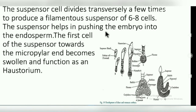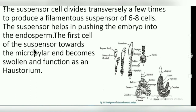The suspensor helps in pushing the embryo into the endosperm. We know that endosperm is food-laden tissue. When the embryo is pushed into the endosperm, the embryo develops properly. The first cell of the suspensor towards the micropyle end becomes swollen and functions as a haustorium.